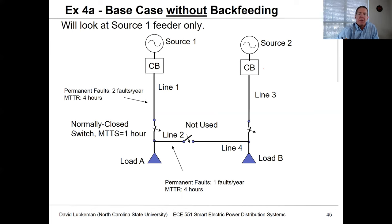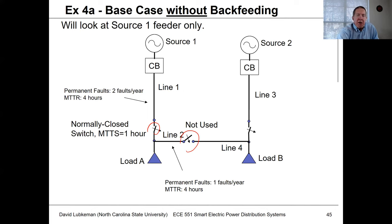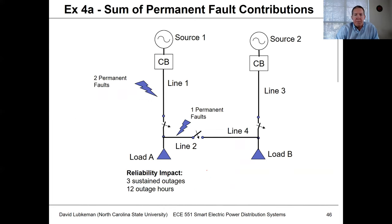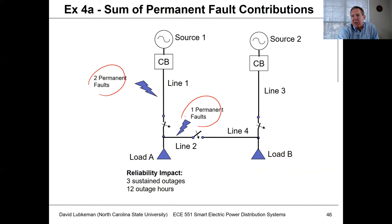For the base case, I assume the sectionalizing switch is always closed and operable in one hour if needed. I've got an open tie switch that we're not going to use yet. Because of the failure rates, we have two faults per year on line one and one fault per year on line two. Summing the permanent fault contributions: since load A has no back-feed and is directly connected to line two, any permanent fault results in a sustained outage at A — three sustained outages, four hours each, gives a total of 12 outage hours.